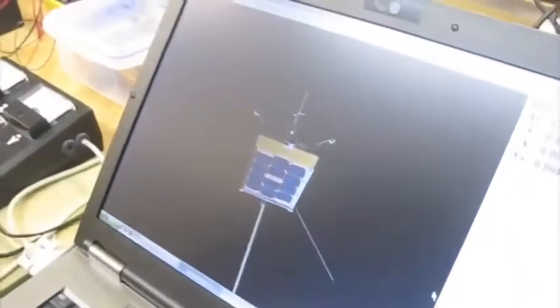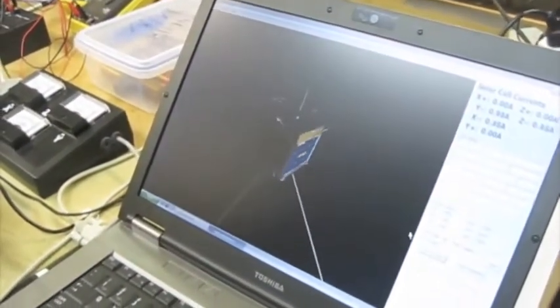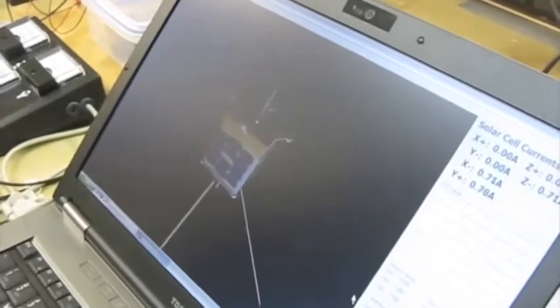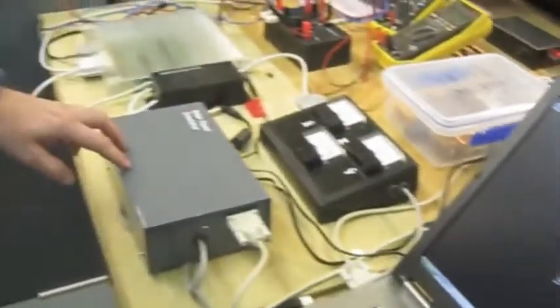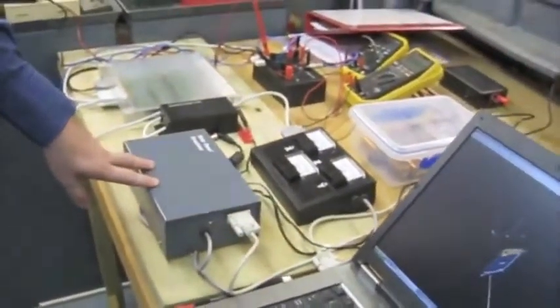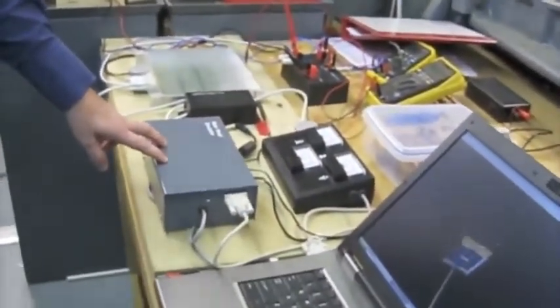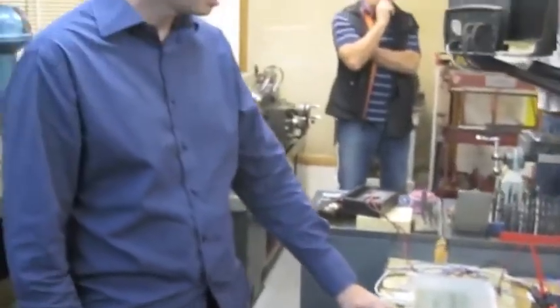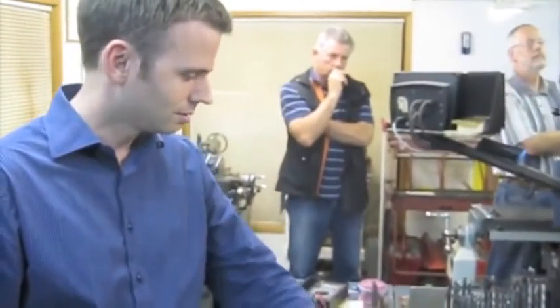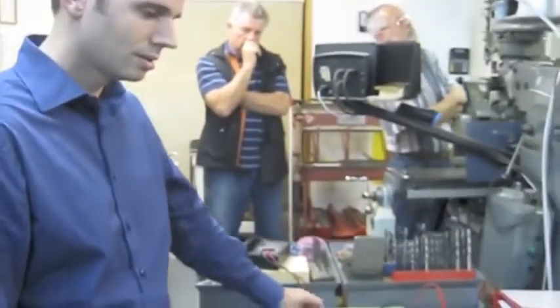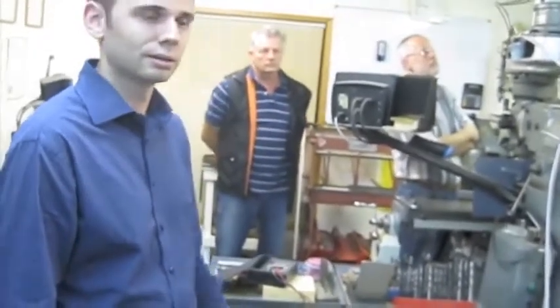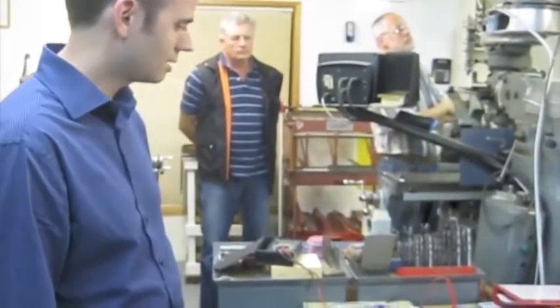Here on the PC, we're running some software that is a graphical simulation of KiwiSat. The PC program is sending serial commands to a microcontroller in this box here. The microcontroller interprets the serial commands which represent the current levels coming out of the solar cells, and drives some current generators, which then pass the current through to the BCR. The whole purpose of this is to simulate the solar cells to the BCR, so that we can exercise the BCR on the ground here.